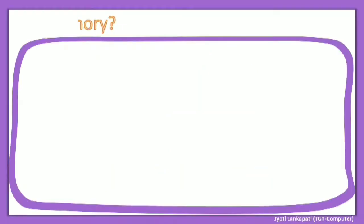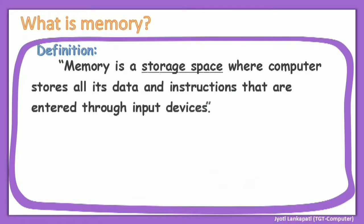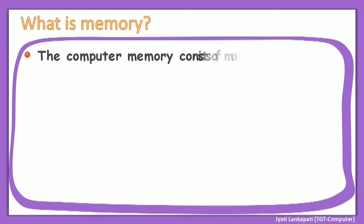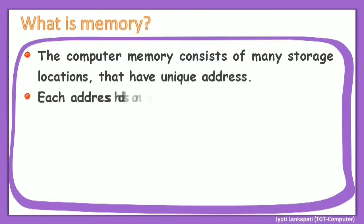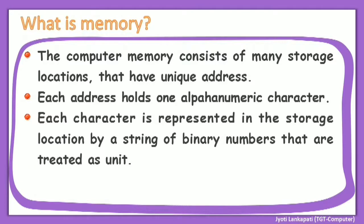We will see the definition first. Memory is a storage space where a computer stores all its data and instructions that are entered through input devices. As soon as we enter data, the computer stores it in this storage space. The computer memory consists of many storage locations that have a unique address, and each address holds one alphanumeric character.